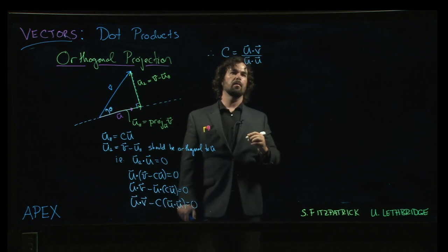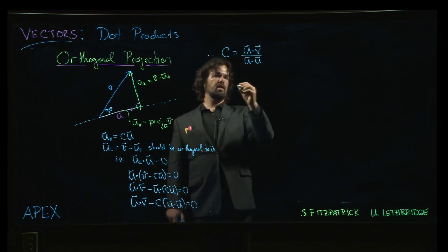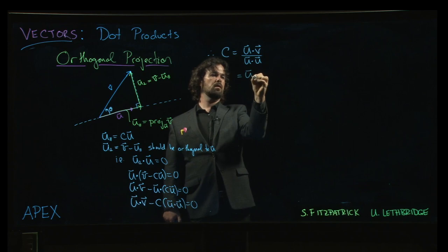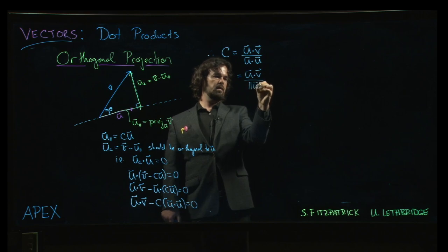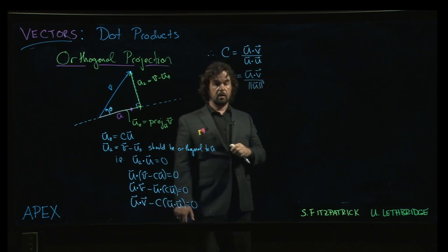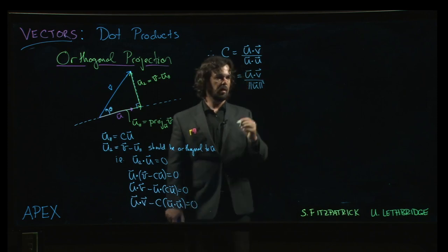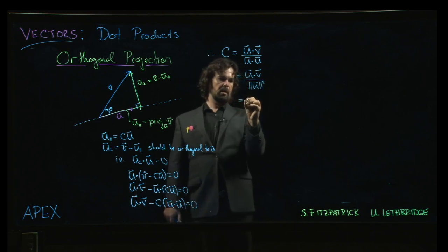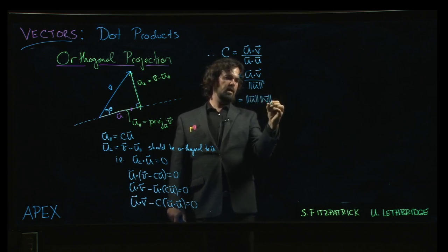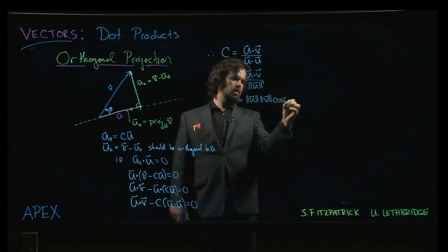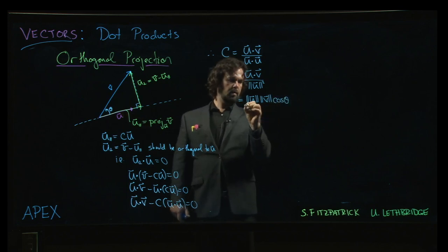Now, notice that if you want u dot u, we know from properties of the dot product that's the same thing as the magnitude of u squared. And another way that you will sometimes see this is, remember that we can write the dot product as the magnitude of u times the magnitude of v times cos theta.